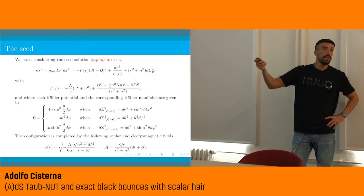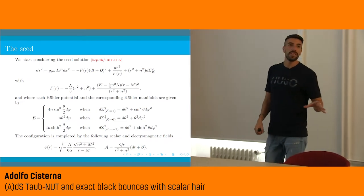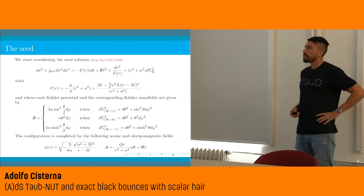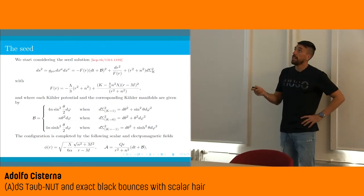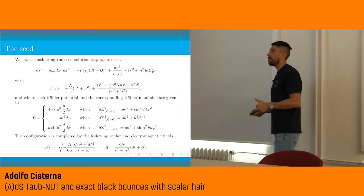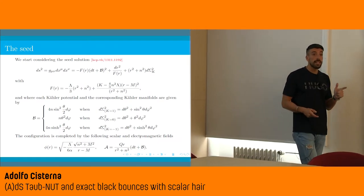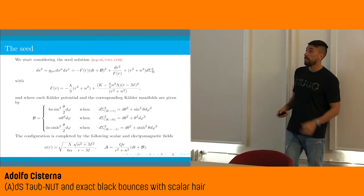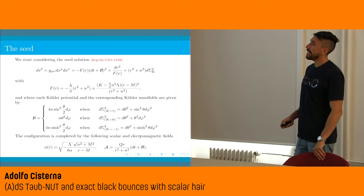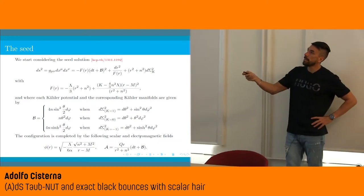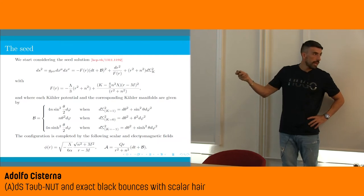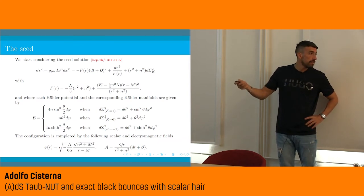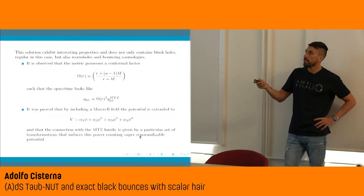So the seed needs to be a solution of Einstein theory with conformally coupled scalar field for a Taub-NUT type spacetime. This solution actually exists and was found in 2013 by some French collaborators. The metric is basically of the Taub-NUT type: take the Taub-NUT metric, replace the metric function by an arbitrary function f since we are now solving a different theory, put a base manifold of constant curvature — sphere, hyperboloid, or torus — and the cross-term depends accordingly on what base manifold is chosen.